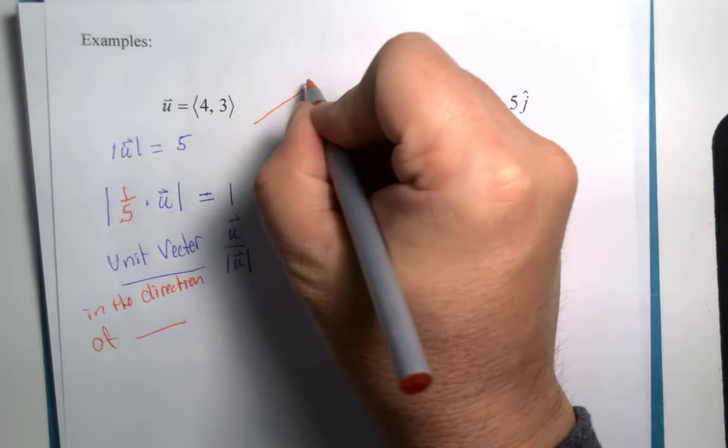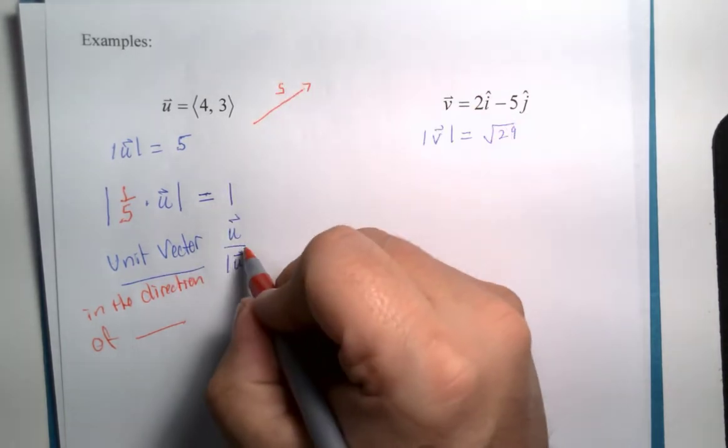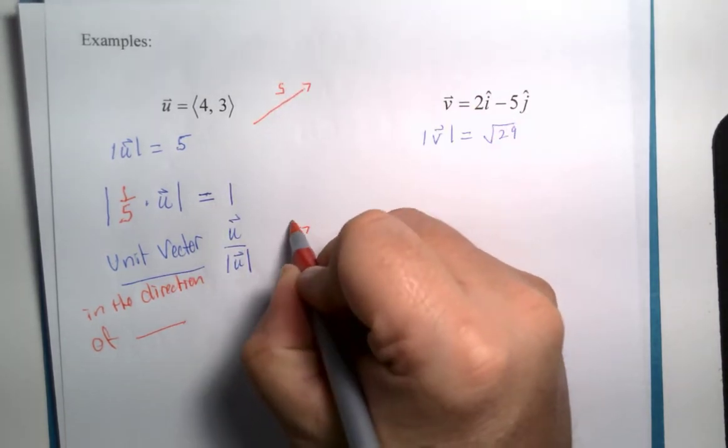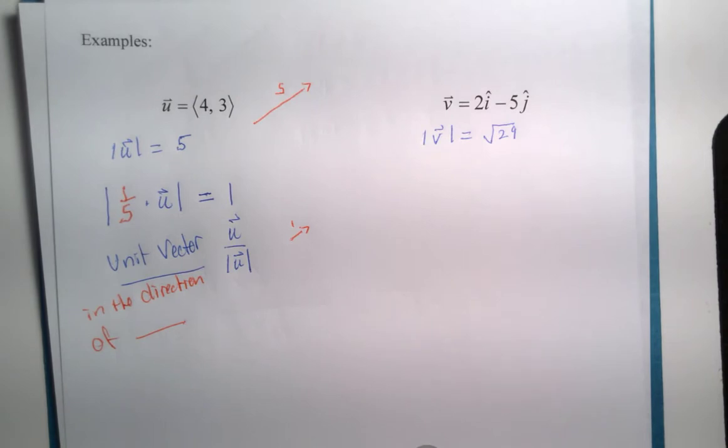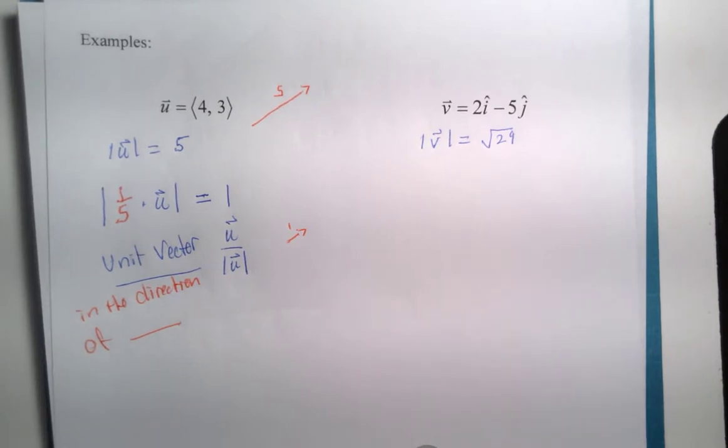So this vector has a length of 5. This new vector has only a length of 1. It is only a length of 1, but the same direction. So it allows us to keep a direction value, but not have to worry about the scale of it.